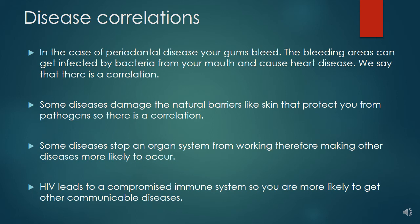Some diseases damage natural barriers like skin that protect you from pathogens, which is also a correlation. Some diseases stop an organ system from working, therefore making other diseases more likely to occur. Another example is HIV — a viral infection that leads to a compromised immune system, so you're more likely to get other communicable diseases. HIV stops you from defending yourself against pathogen invasions or infections, so things like colds or flu can actually cause serious damage.